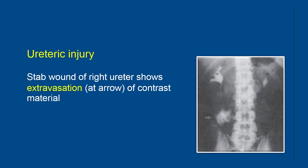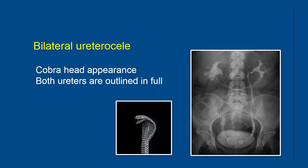The next example is a case of ureteric injury on the right side — this was a stab wound of the right ureter — and it shows extravasation of contrast material at the site of injury. This is a case of bilateral ureterocele; ureteroceles are dilated intravesical portions of the ureters giving what is known as the cobra head appearance.